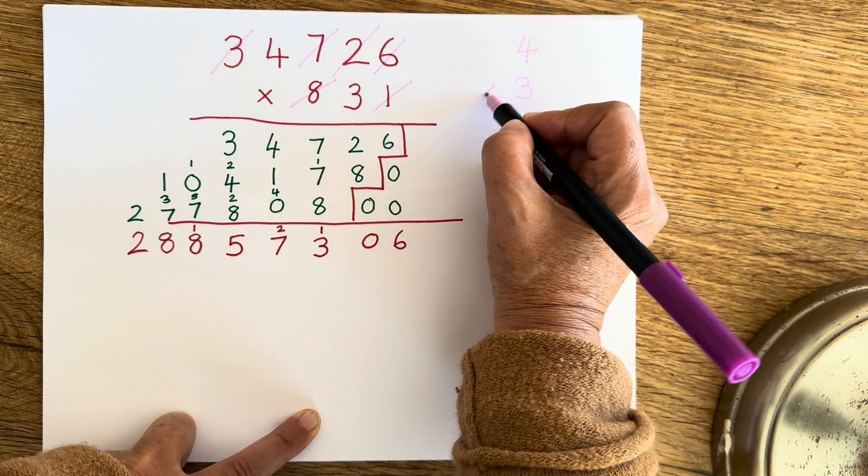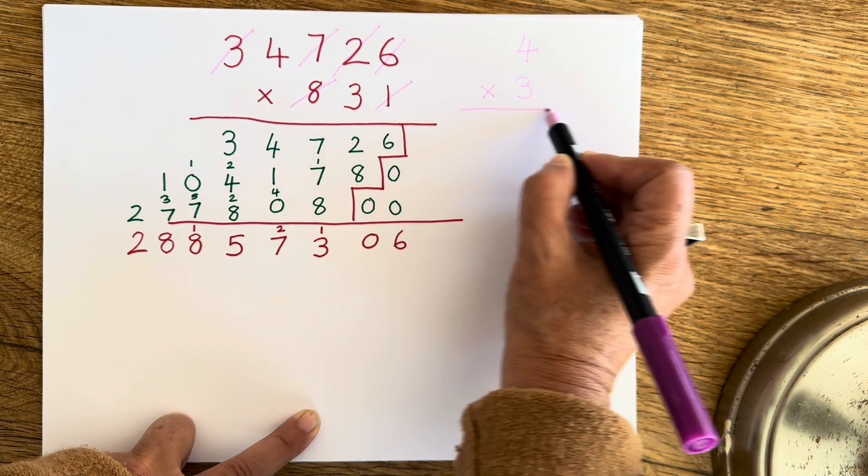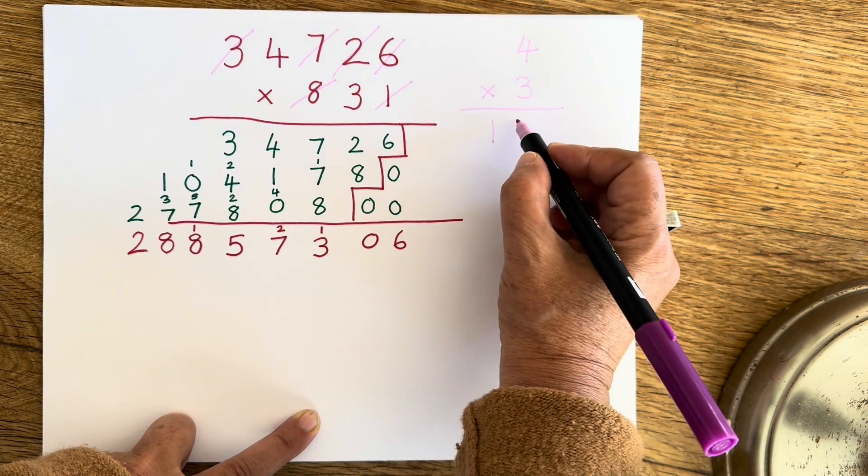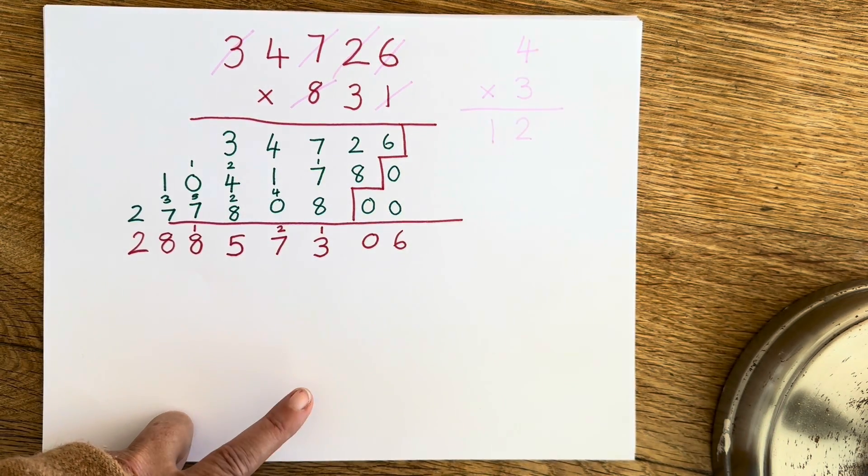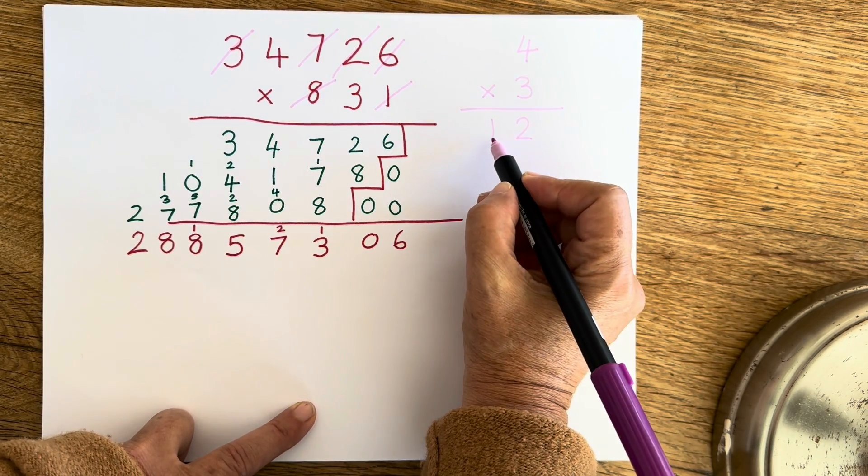Then the next thing I'm actually going to do is times the four by the three. So four times three equals twelve. Now the next move is a little bit odd because I'm going to dispense with place value altogether...